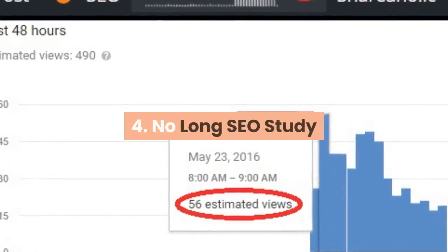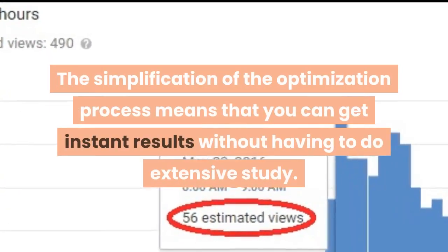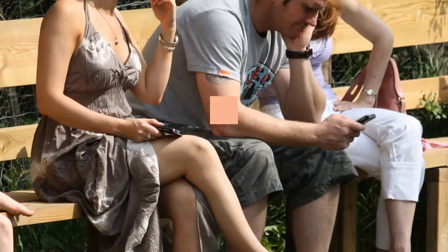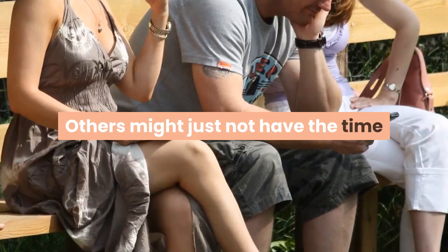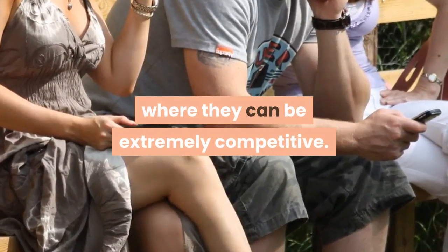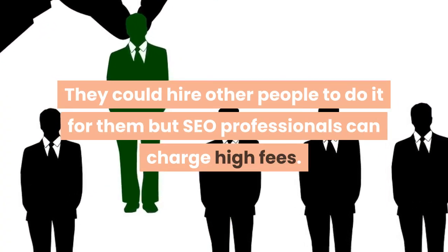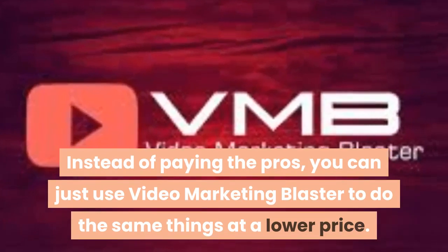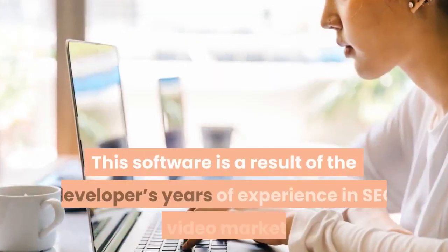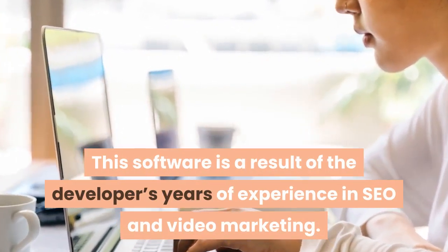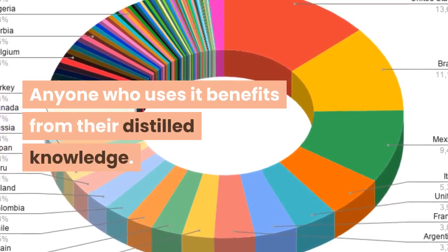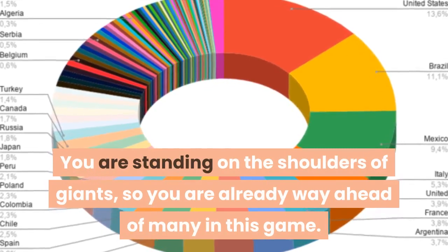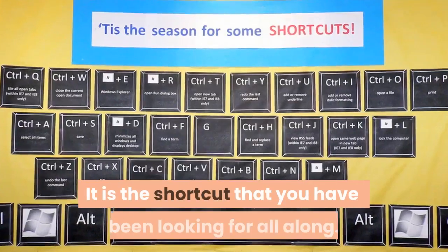Feature 4: No long SEO study. The simplification of the optimization process means that you can get instant results without having to do extensive study. Although knowing the ins and outs of SEO is incredibly advantageous, not everyone is interested, and others simply don't have the time. They could hire SEO professionals, but that can be expensive. Instead, you can use Video Marketing Blaster at a lower price. Feature 5: No experience needed. This software is a result of the developer's years of experience in SEO and video marketing. Anyone who uses it benefits from their distilled knowledge, starting with a strong base rather than from scratch — it is the shortcut you have been looking for.